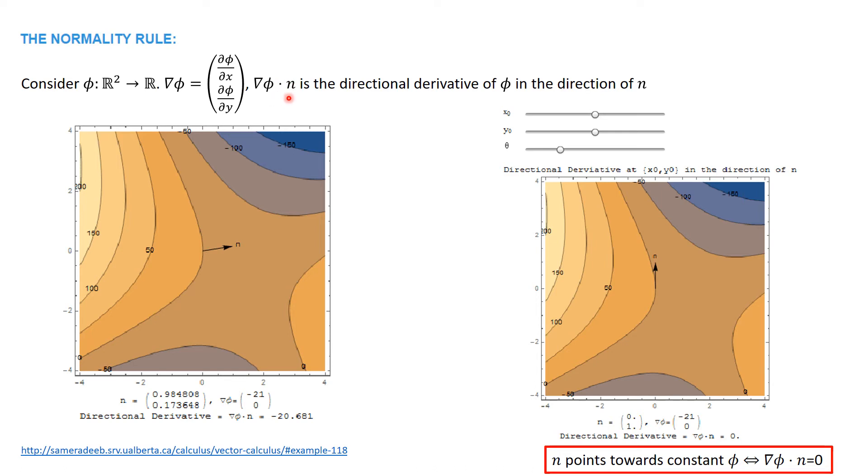The gradient of φ dot n gives the directional derivative of φ in the direction of n. Here we show an example for a particular scalar field φ.